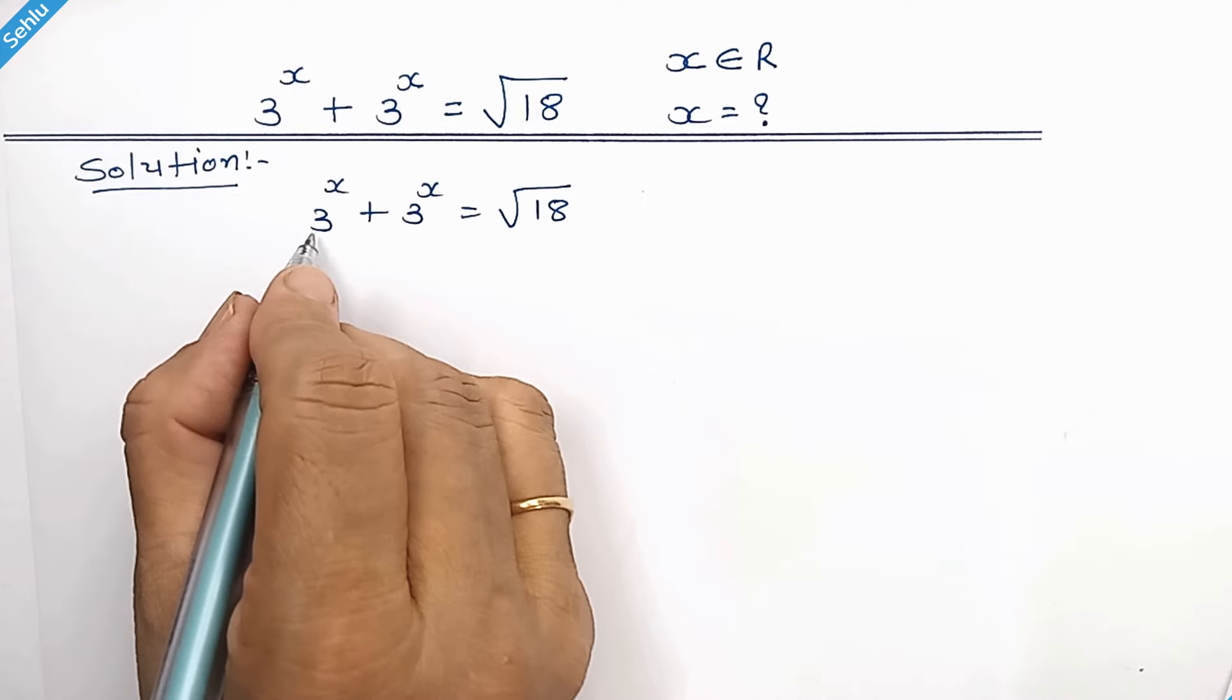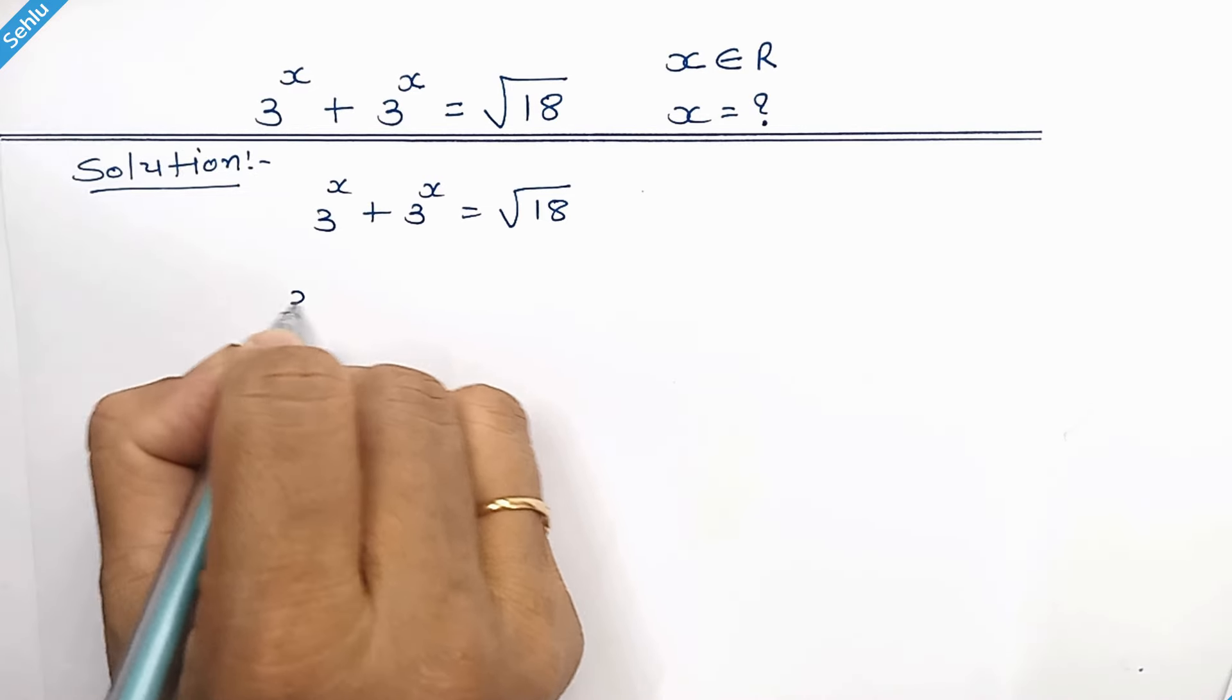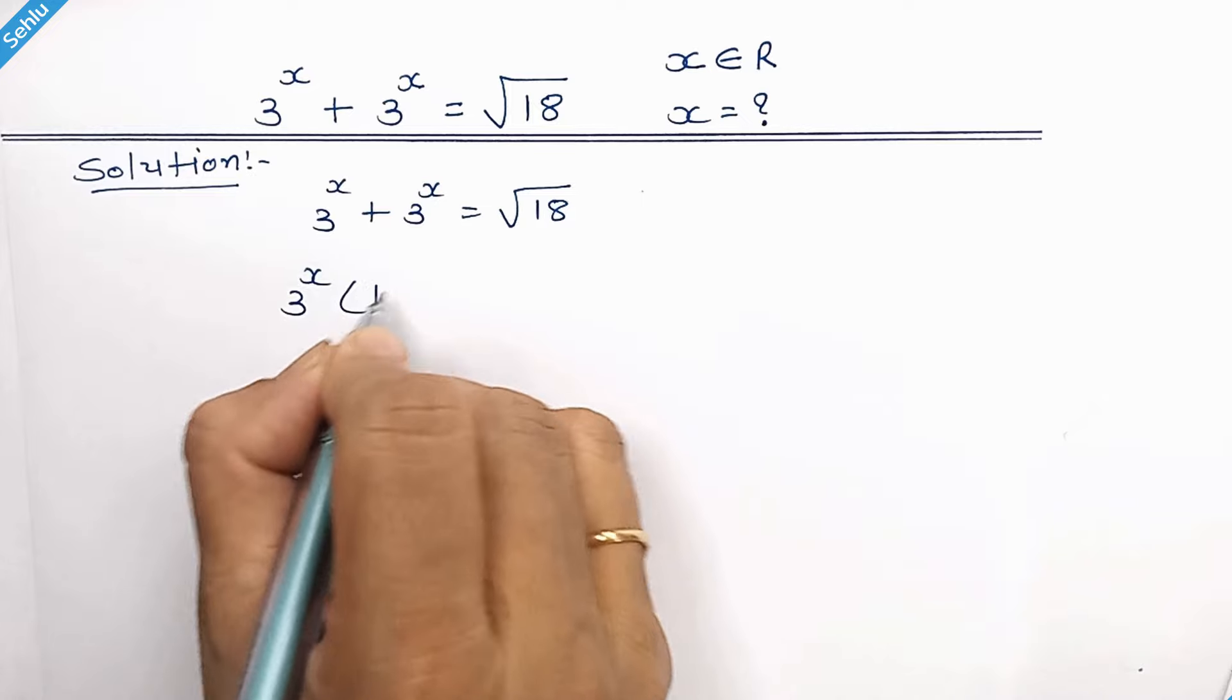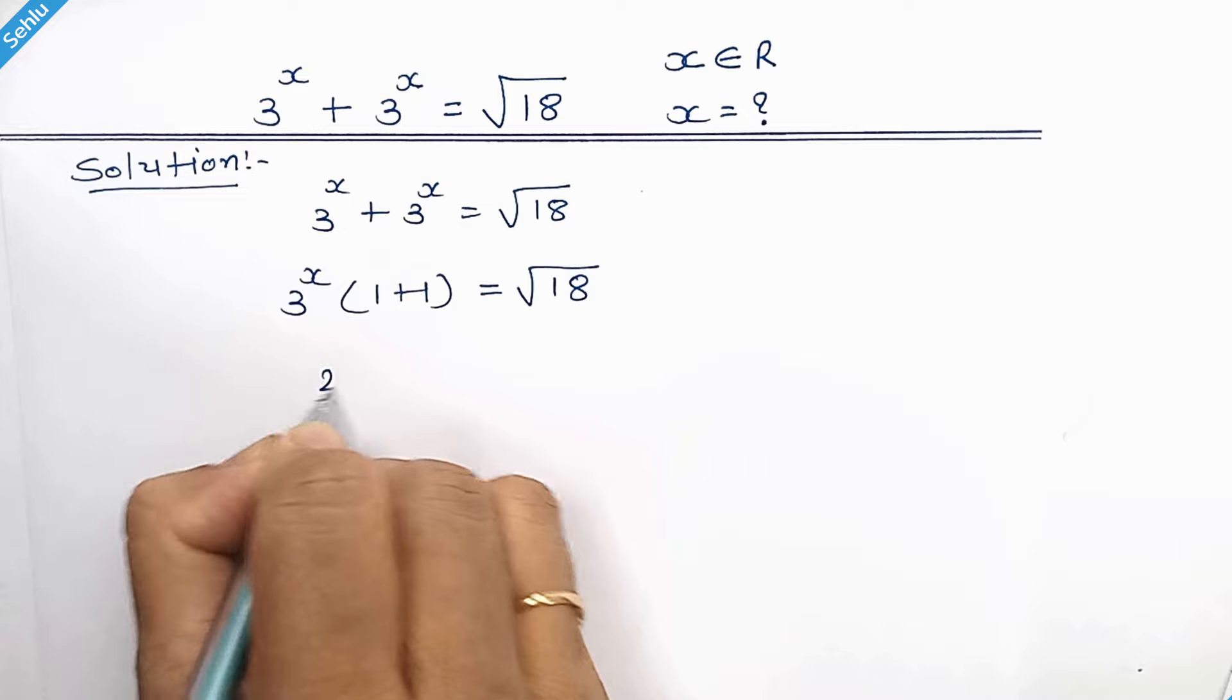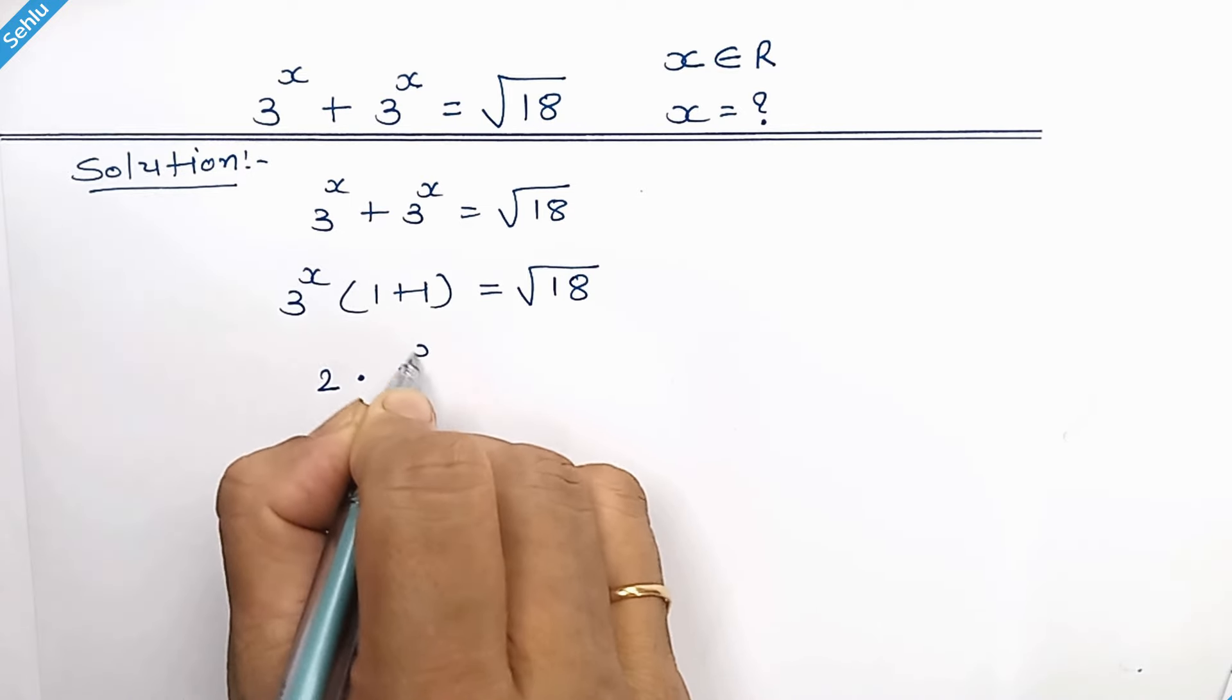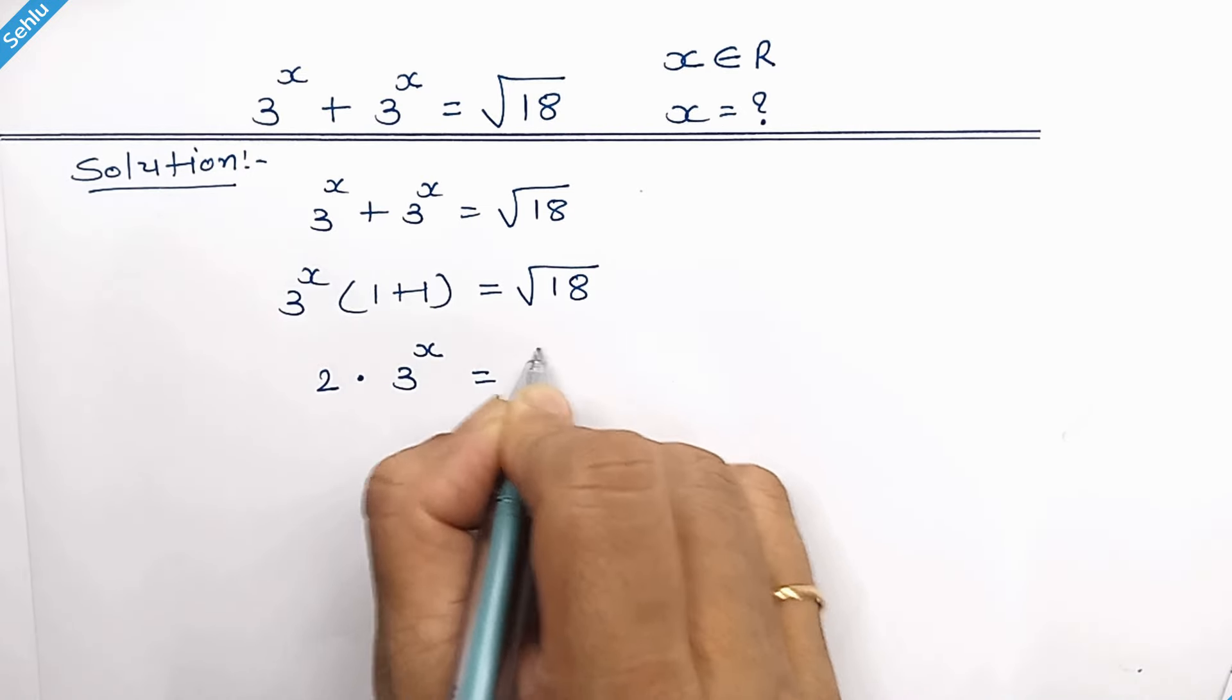In the first step, we will take 3 to the power x common, so it will be 2 times 3 to the power x equals square root of 18.